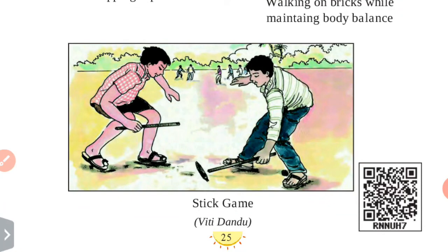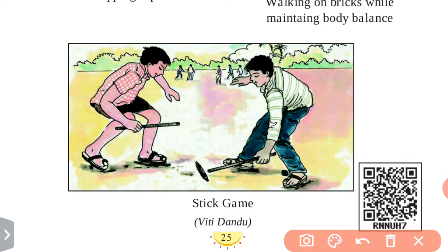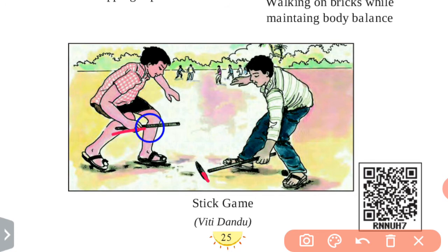Now the next one is the Stick Game, also called Vitti Dandu. This game is also known as Vitti Dandu and is played in rural areas and small towns. This game requires a stick — a big stick and a smaller stick. The small stick is round in the middle and sharp at the ends. This small stick is called the Ghilli, and the big stick is called the Dandu.